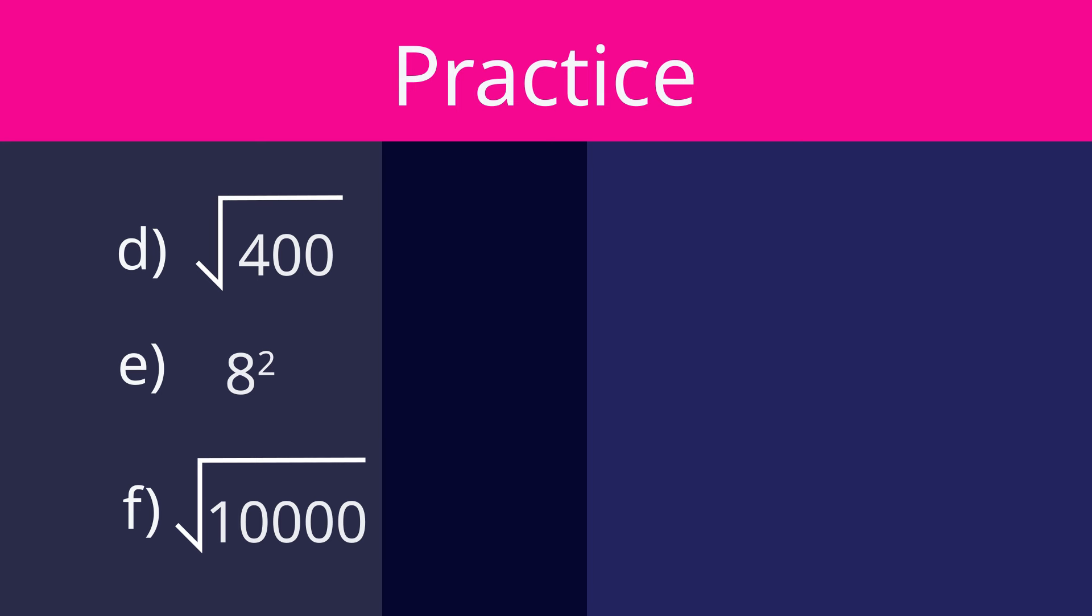Square root of 400 equals 20, because 20 times 20 equals 400. 8 squared equals 64, because 8 times 8 is 64.